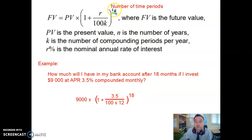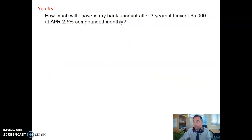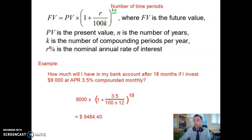So I think this K times n is useful, but knowing that that's just the number of time periods also keeps things a bit more simple. So we've now just got to set this up in our calculator, work carefully, and you should find it's $9,484.40. There you go.